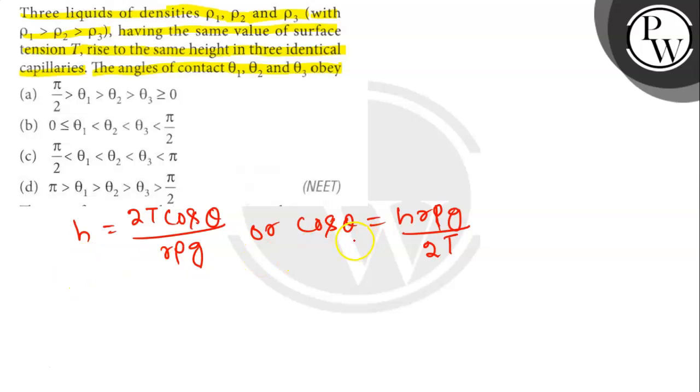Where θ is angle of contact, R is radius of capillary tube, T is surface tension, P is density of liquid.